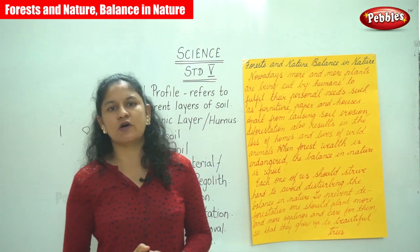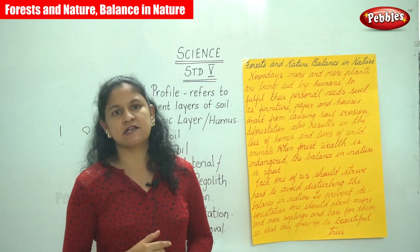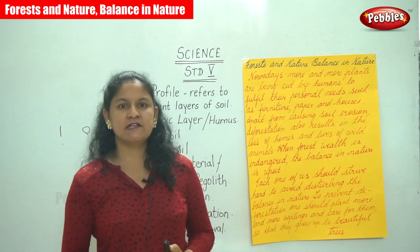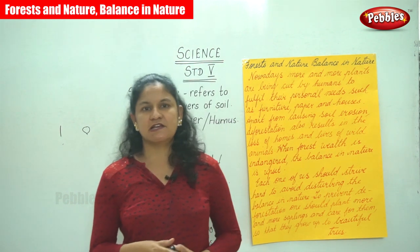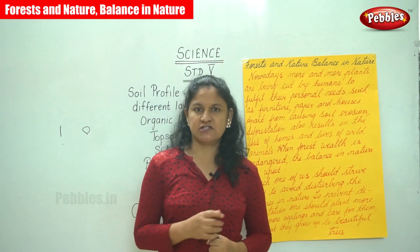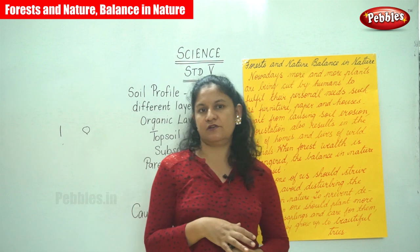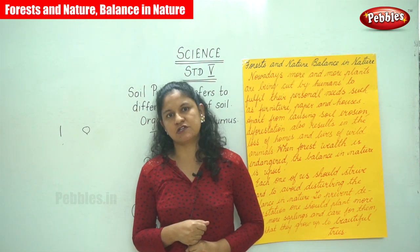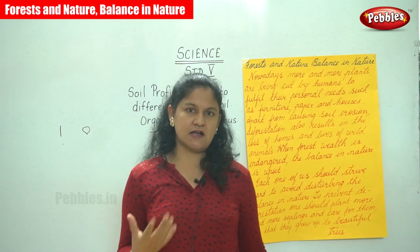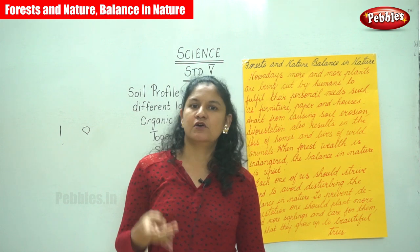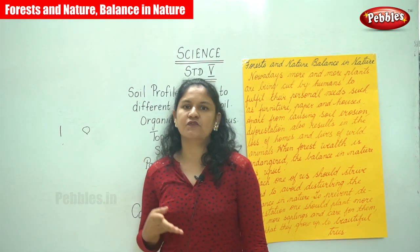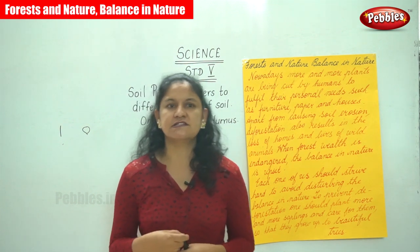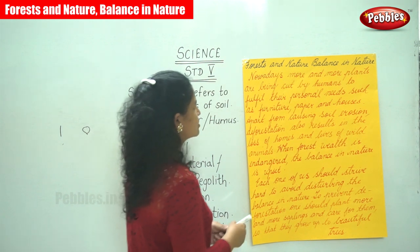We spoke about the soil profile — the different layers: the organic layer or humus, the topsoil, the subsoil, and the parent material or regolith. The next topic is soil erosion and the conservation of soil: the causes of soil erosion and the different methods we can adopt to prevent it, such as increasing vegetation, crop rotation, cover crops, development of pastures, construction of embankments, and making terraces.